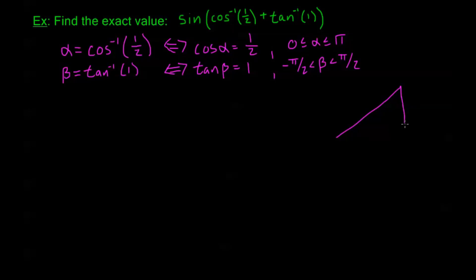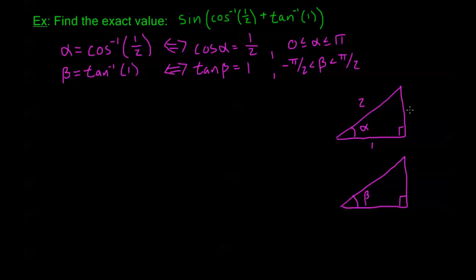Now I can set up my two triangles, one for alpha and one for beta. For the alpha triangle: cosine of alpha equals one half, so adjacent is 1, hypotenuse is 2, and opposite is the square root of 2 squared minus 1 squared, or the square root of 3. For the beta triangle: tangent equals 1, so opposite over adjacent is 1 over 1, and by the Pythagorean theorem the hypotenuse is the square root of 2. We should recognize these — the first is a 30-60-90 triangle and the second is a 45-45-90 triangle.